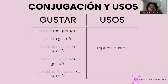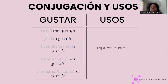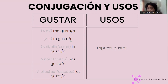Something I almost forgot to mention: this part in gray in parentheses is optional — you will see it happening but it is optional if you want to emphasize. So we say: me gusta/gustan, or a mí me gusta/gustan; a ti te gusta/gustan — that slash means it could be either gusta or gustan; a él, ella, usted le gusta/gustan; a nosotros/nosotras nos gusta/gustan; a ellos, ellas, ustedes les gusta/gustan.